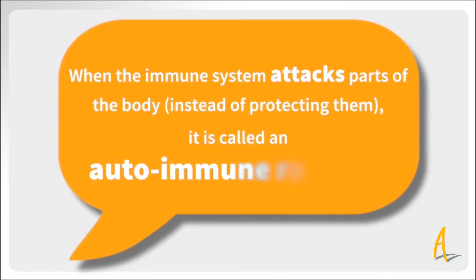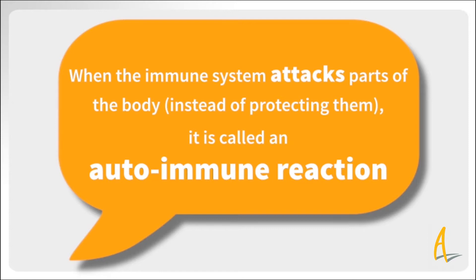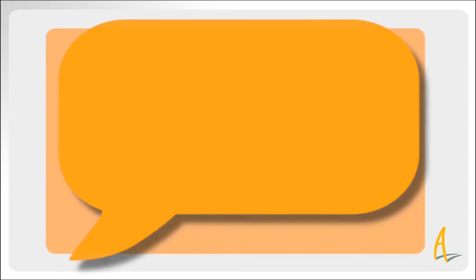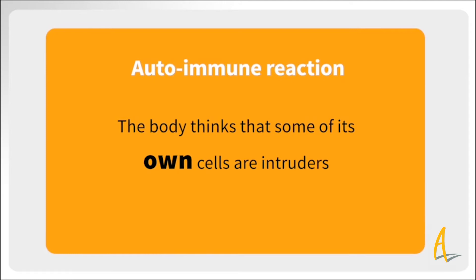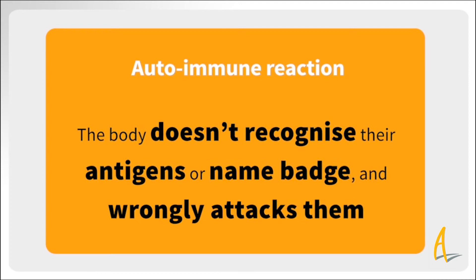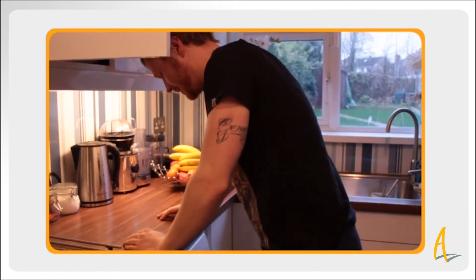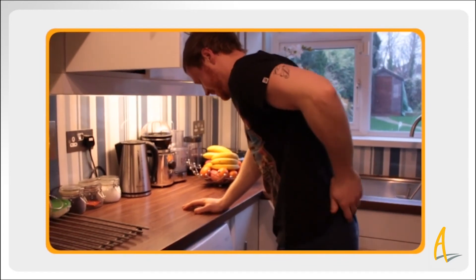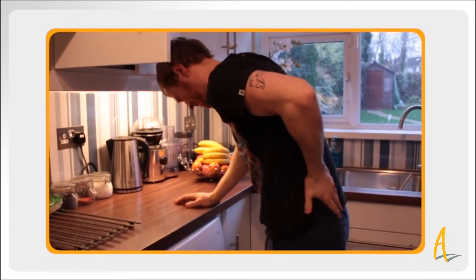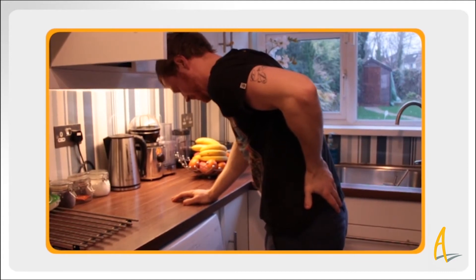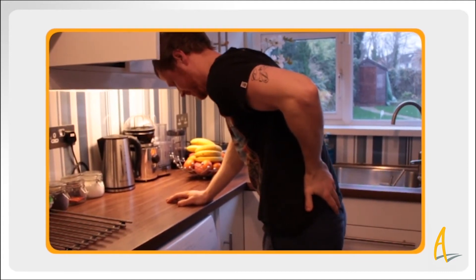However, when the immune system attacks parts of the body instead of protecting them, it's called an autoimmune reaction, and doctors don't fully understand why this occurs. In an autoimmune reaction, the body thinks that some of its own cells are intruders, because for some reason it doesn't recognize their antigens or name badge, and wrongly attacks them. In certain types of arthritis, including AS, an autoimmune reaction occurs mainly in the joints, and the joints in the spine in particular, so that they become red and swollen or inflamed.